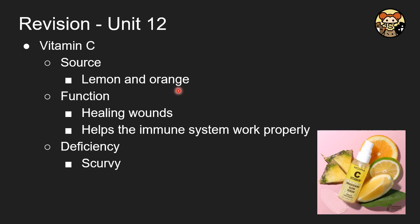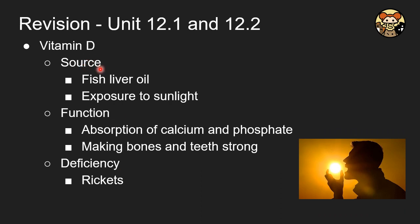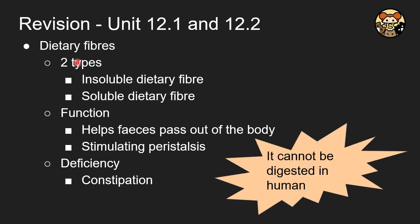For vitamin C, the source is lemon and orange. The function is healing wounds and helping the immune system work properly. Deficiency causes scurvy. For vitamin D, the source is fish liver oil, and it can also be obtained by exposure to sunlight. The function is absorption of calcium and phosphate. Deficiency leads to rickets, similar to calcium deficiency. For dietary fibers, there are two types: insoluble and soluble. Their function is to stimulate peristalsis and help feces pass out of the body. Deficiency causes constipation. Note that humans cannot digest dietary fiber, though some other animals can.